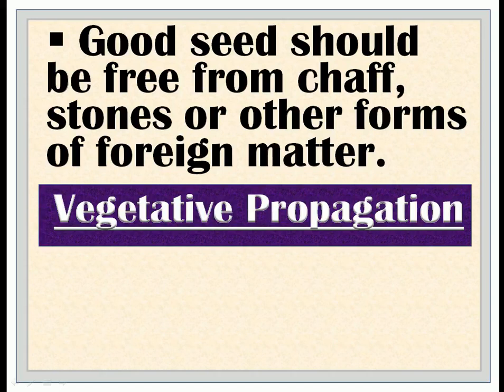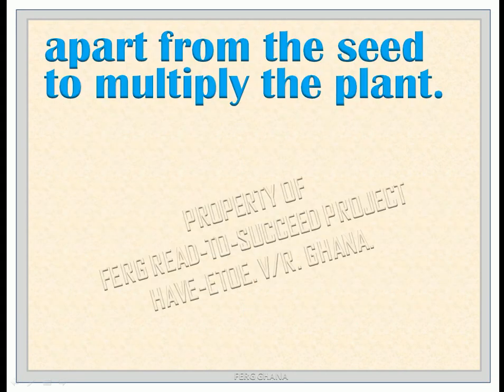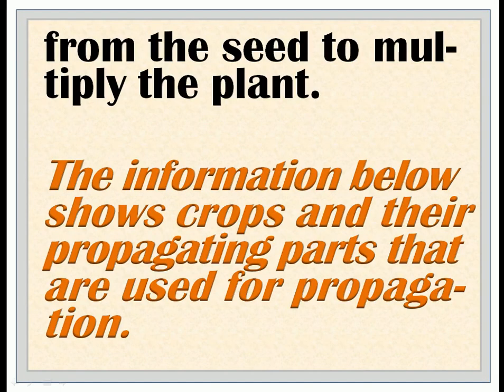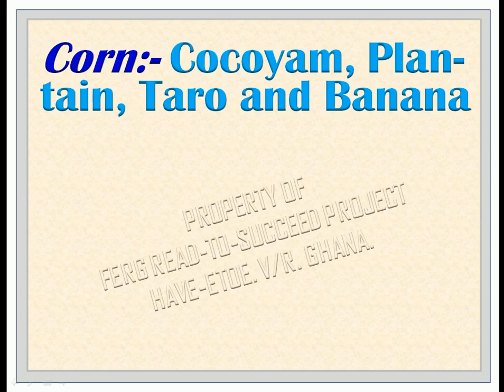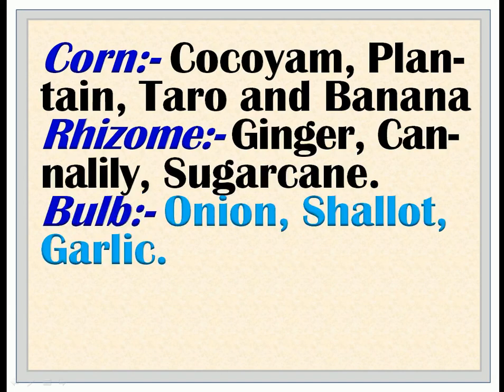Vegetative propagation is the use of any part of the plant apart from the seed to multiply the plant. Crops and their propagating parts: Corm — cocoyam, yam, plantain, taro, banana. Rhizome — ginger, cannelly, sugarcane. Bulb — onion, shallot, garlic.